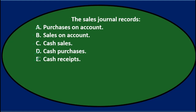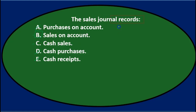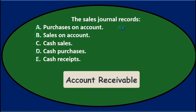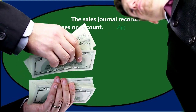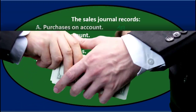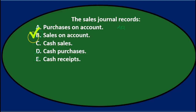I think we're narrowing it down to B and C. The sales journal records B, sales on account, and C, cash sales. The answer is actually B. The sales journal does not represent all sales — it really means sales for accounts receivable, more appropriately called the accounts receivable or sales on account journal. If we received cash and made a sale at the same point in time, it would go into the cash receipts journal. So the sales journal records B, sales on account.